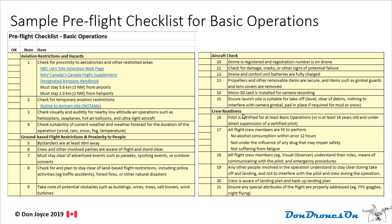And finally, last but not least, that the flight crew is ready to go — including no alcohol having been consumed in the previous 12 hours, everyone understands their roles, everyone understands to stay clear during takeoff and landing, and that any other special attributes of the flight are properly addressed. For example, if you're flying at night, making sure that those rules are covered. We'll actually cover those rules in Module 7. So that's an example of a pre-flight checklist. I think it's a pretty good one, in fact.